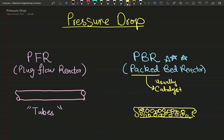On the left side I have my plug flow reactor. Plug flow reactors are essentially tubular reactors — they're tubes in which we have plug flow, meaning a flat velocity profile. On the right side we have packed bed reactors.